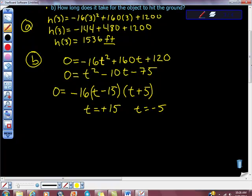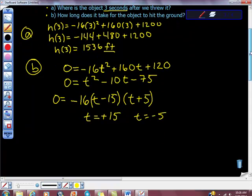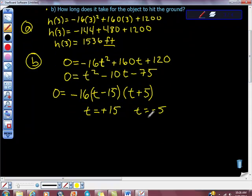Now, the question we're asked is, how long does it take for the object to hit the ground? So we're looking for seconds or time, and looking at these two possibilities, 15 and -5. We can't have negative time. So that one would be out. So we're left with t = +15 seconds.